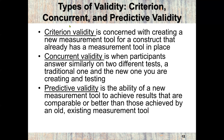We also have criteria validity, concurrent validity, and predictive validity. Criteria validity is concerned with creating a new measurement tool for a construct that already has a measurement tool in place. Concurrent validity is when participants answer similarly on two different tests — a traditional one and a new one being created and tested. Predictive validity refers to the ability of a new measurement tool to achieve results that are comparable to or better than those achieved by an existing measurement tool.